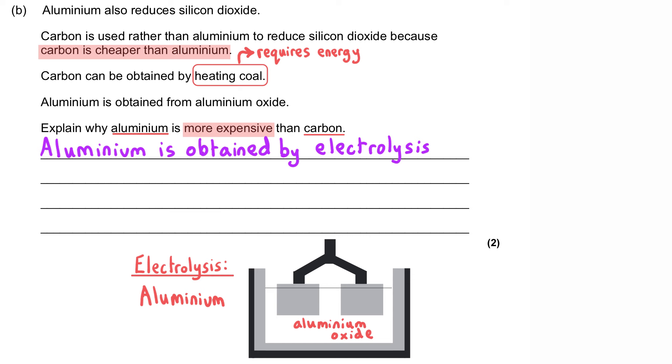And in electrolysis, we need to melt the aluminium oxide at high temperatures in an electrolysis cell, and then supply a large amount of energy continuously, and separate out the aluminium from the oxygen. And so this is obviously going to be expensive.